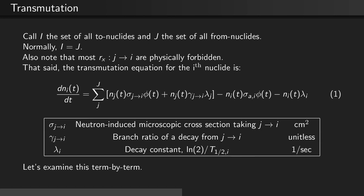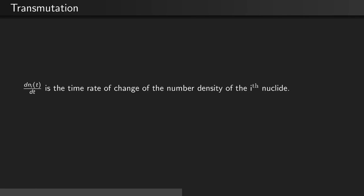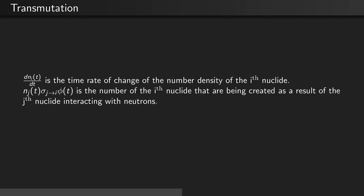Let's examine this term by term. dNi/dt is the time rate of change of the number density of the i-th nuclide. Nj(t) σj→i times the flux is the number density of the i-th nuclide that are being created as a result of the j-th nuclide interacting with neutrons.